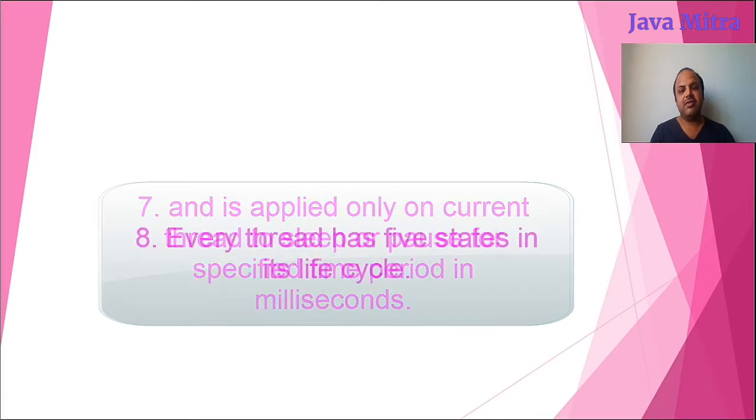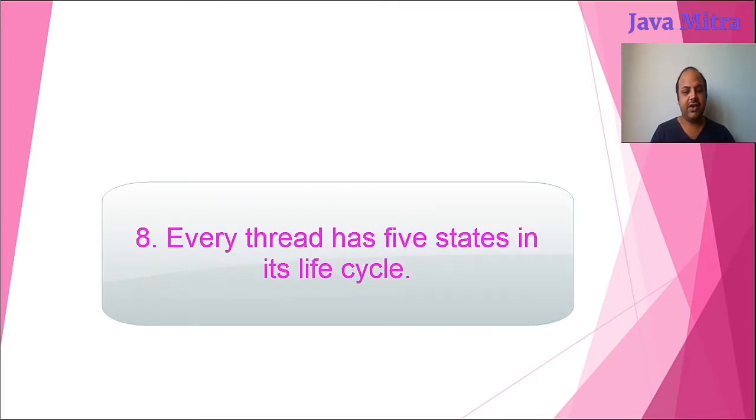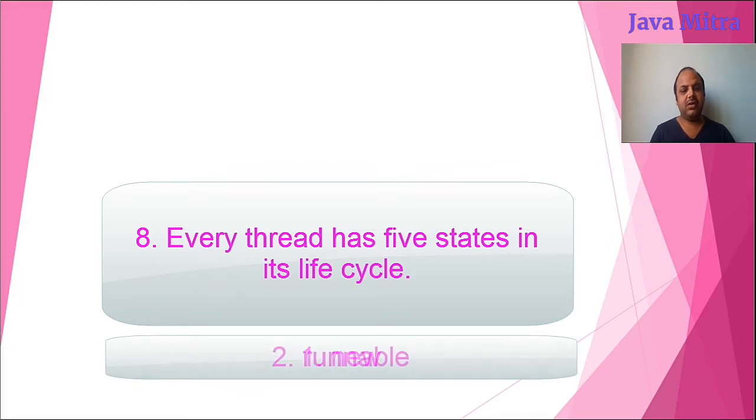Every thread has five states in its life cycle. They are: new, runnable, running, blocked if paused for any reason and continues with runnable state whenever the reason is satisfied, and dead or terminated state when the thread has finished its work.